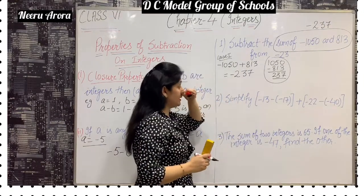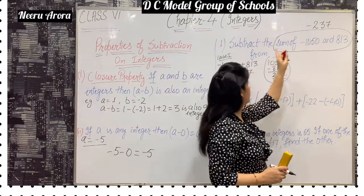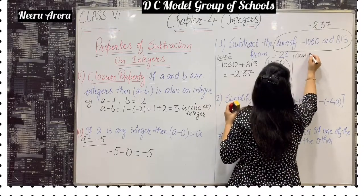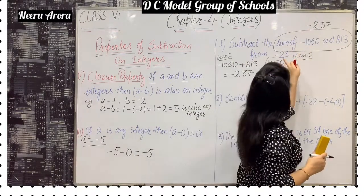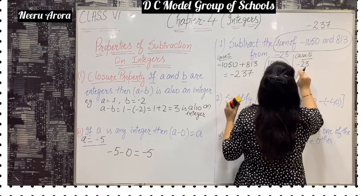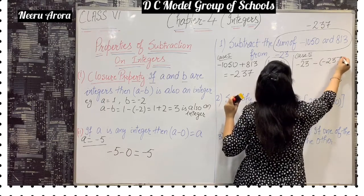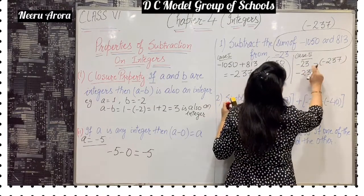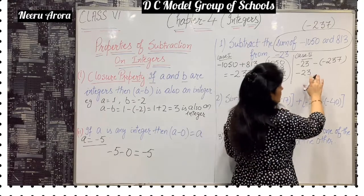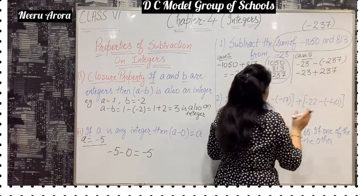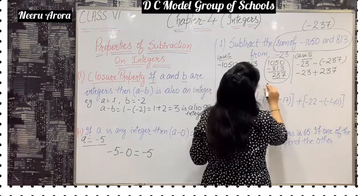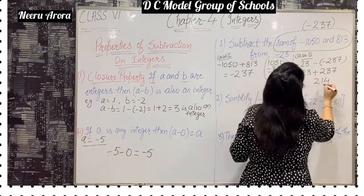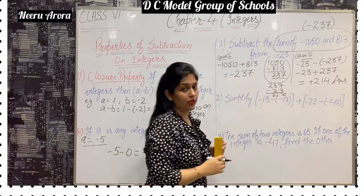Now read the statement like this: subtract minus 237 from minus 23. In case 2, we subtract minus 237 from minus 23. There are two signs between the terms, so first convert to a single sign: minus minus becomes plus. So we again have two opposite signs and we subtract the terms. We get 240, and the sign of the bigger term comes.